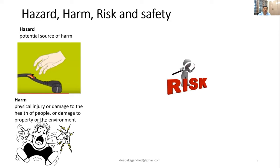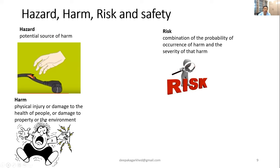Risk is a combination of the probability of occurrence of harm and the severity of that harm. For example, if a patient has already gotten a shock, the severity is high; if someone is just about to touch something but hasn't, the severity is less. We classify risk as low, medium, and high.